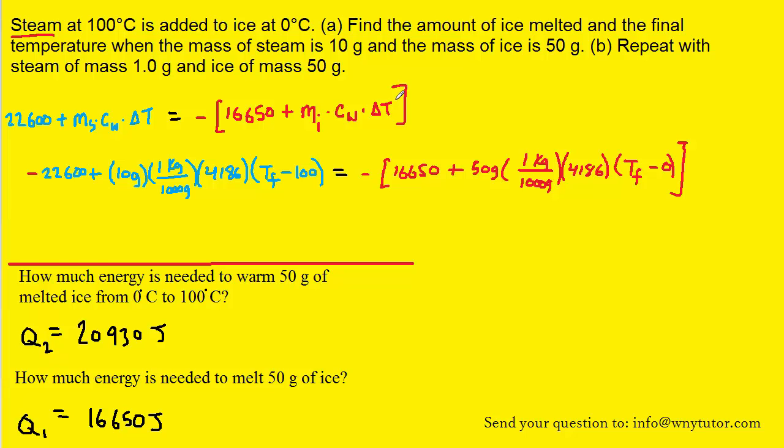Now we've got to algebraically simplify and solve for Tf. So we can multiply the 10 times 1 over 1000 times 4186 here and do the same kind of thing right here. And then maybe what we can do, Tf minus 0 is just Tf. We can distribute this negative sign to the 16,650 and also to this term over here. I would also distribute the 41.86 through the parentheses here. At this point it should be relatively straightforward to collect like terms and solve for Tf. If you have any questions about how to do that, please let me know. But in the end, Tf turns out to be about 40.4 degrees Celsius. And so part A is solved.